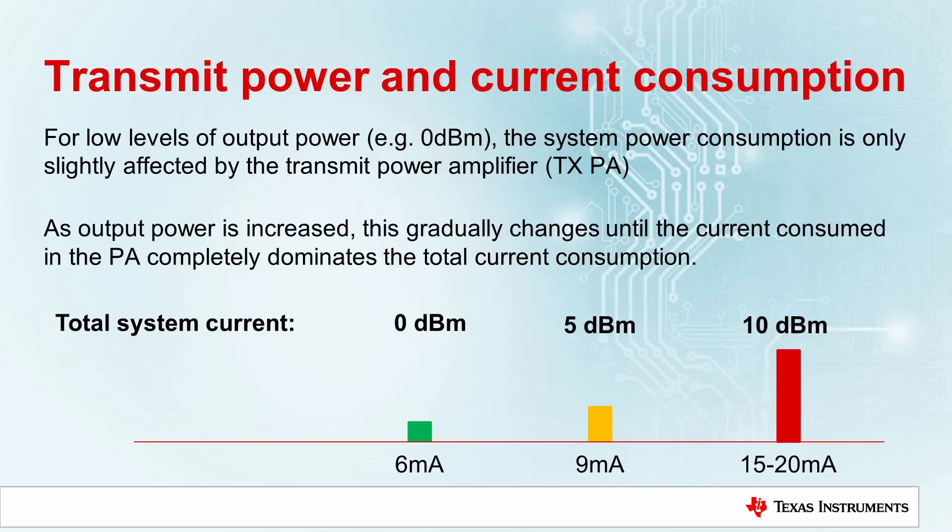For this demonstration, we chose a TX power of 5 dBm, which increases the peak current consumption from 6 to 9 milliamps. This is a moderate increase and will in most cases still allow the system to use the same power supply architecture and energy source, for example, a coin cell battery.